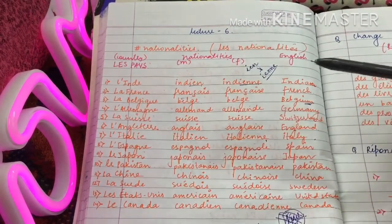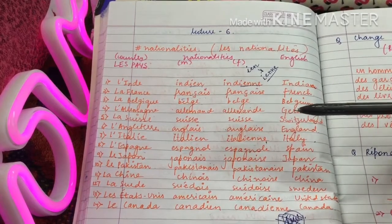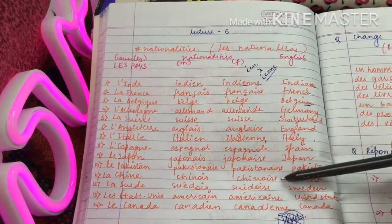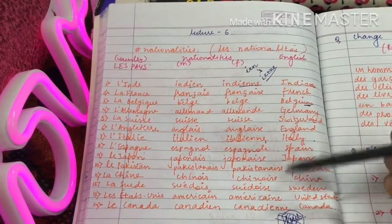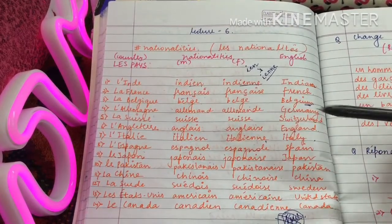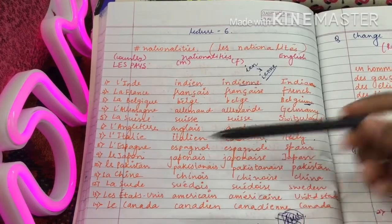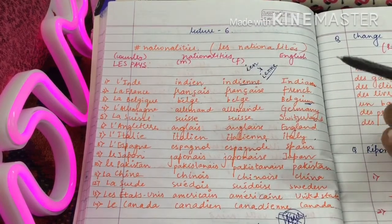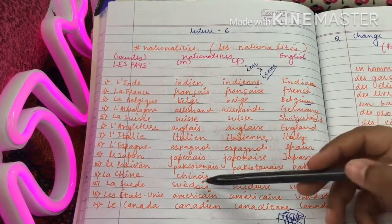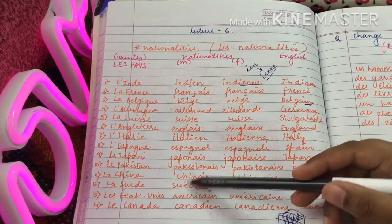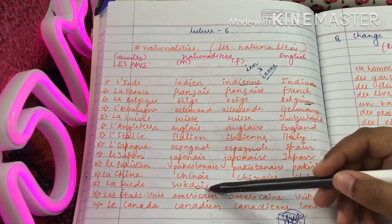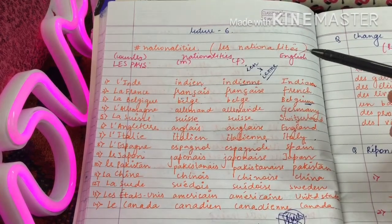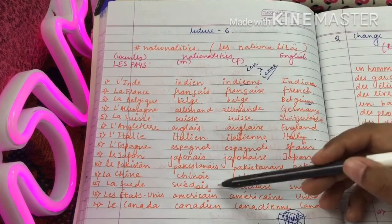'La Chine' means China. The nationality is 'Chinois', and for feminine we add an E. 'La Suède' means Sweden. Sweden's nationality is 'Suédois' — S-U-E-D-O-I-S. And for feminine, we add an E.